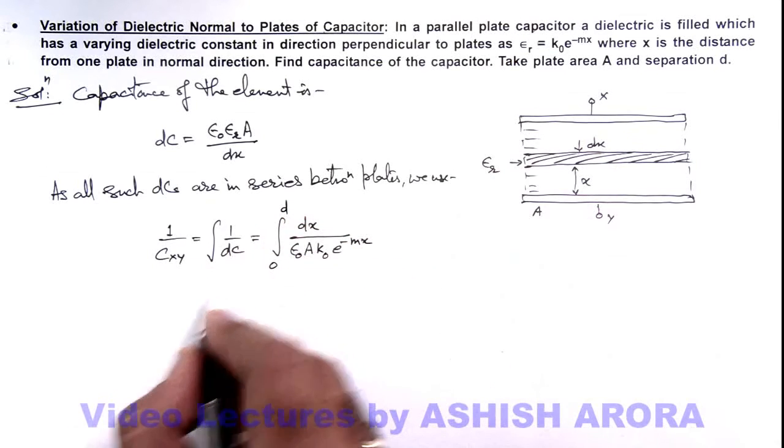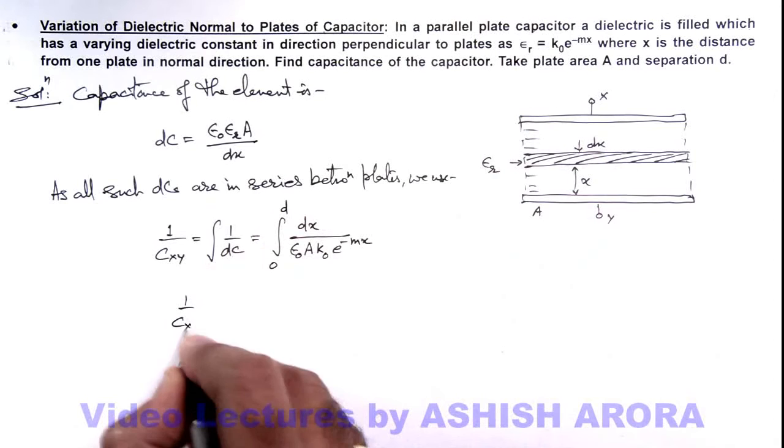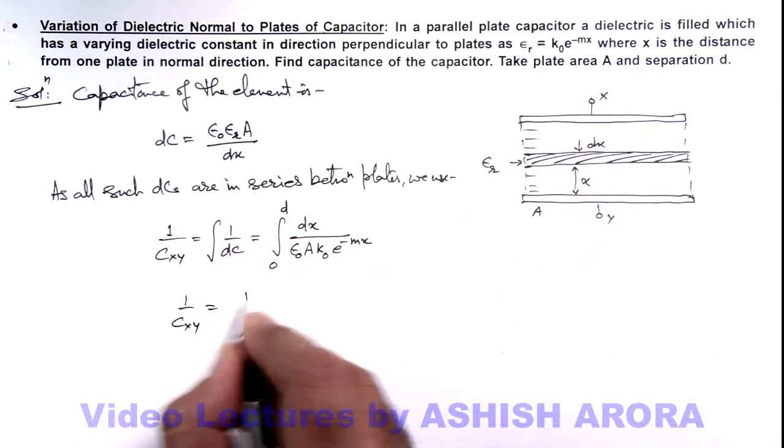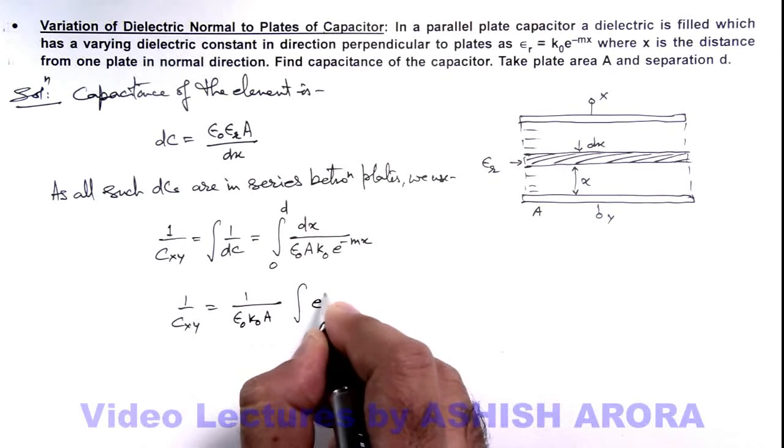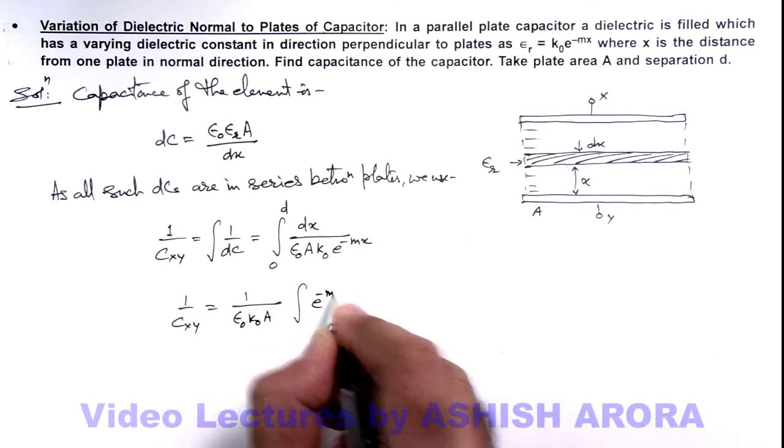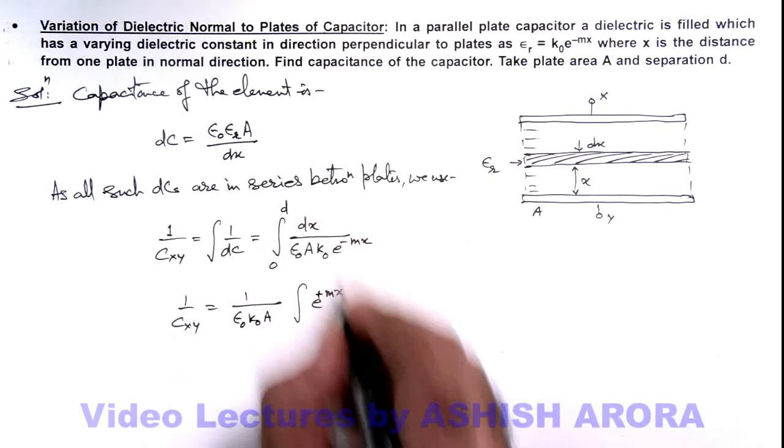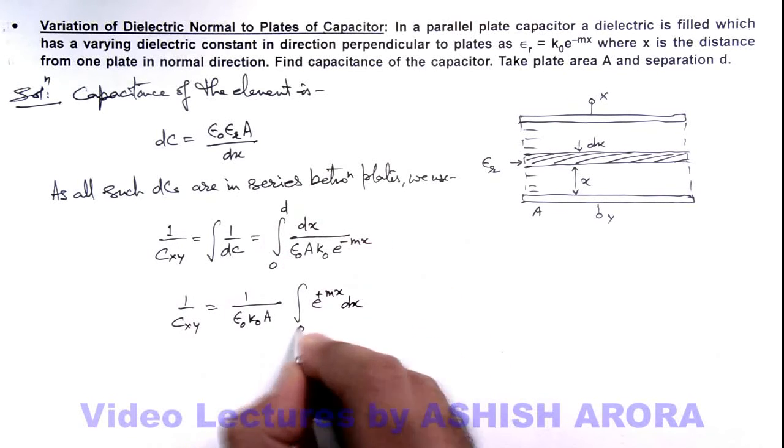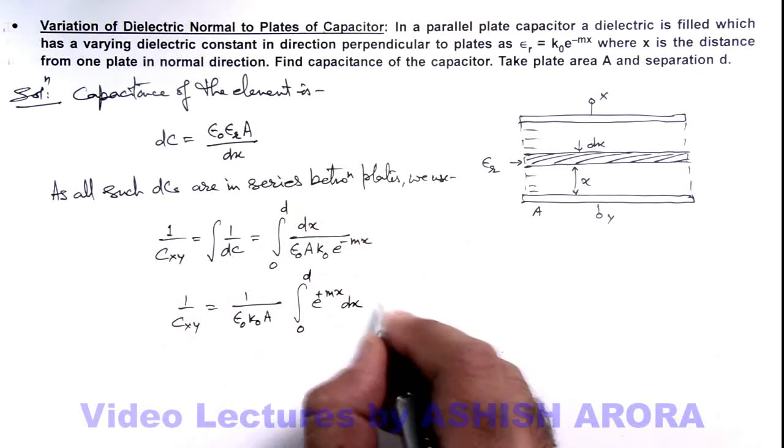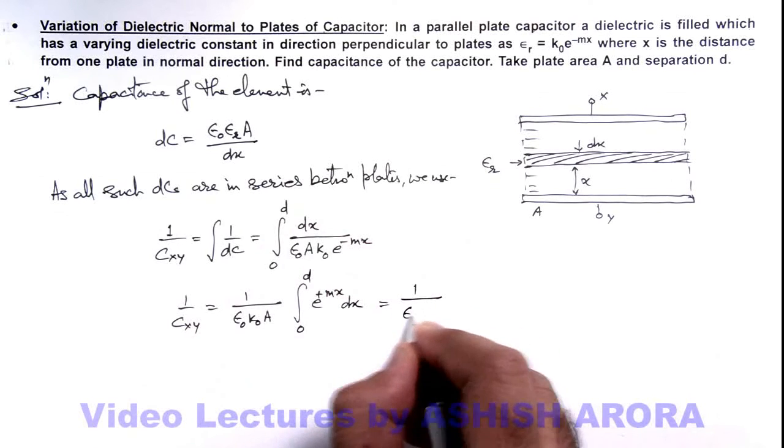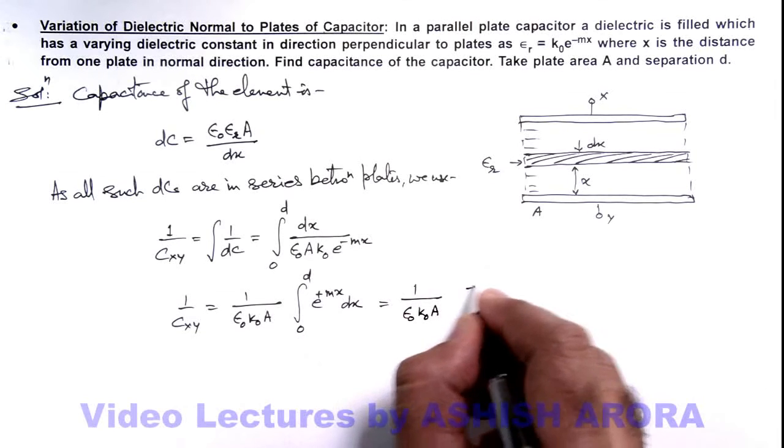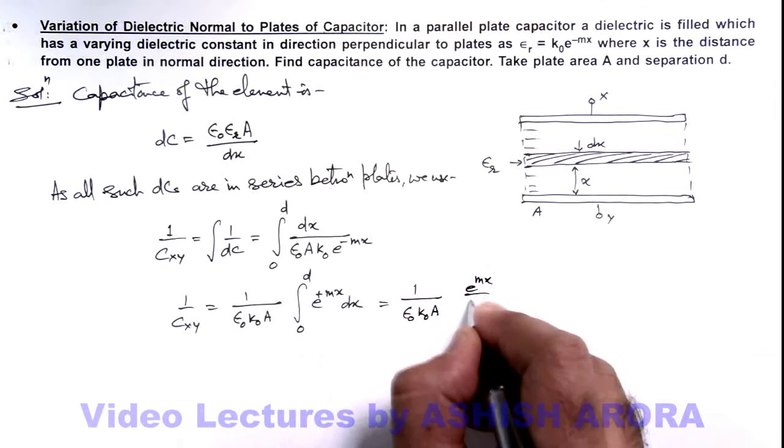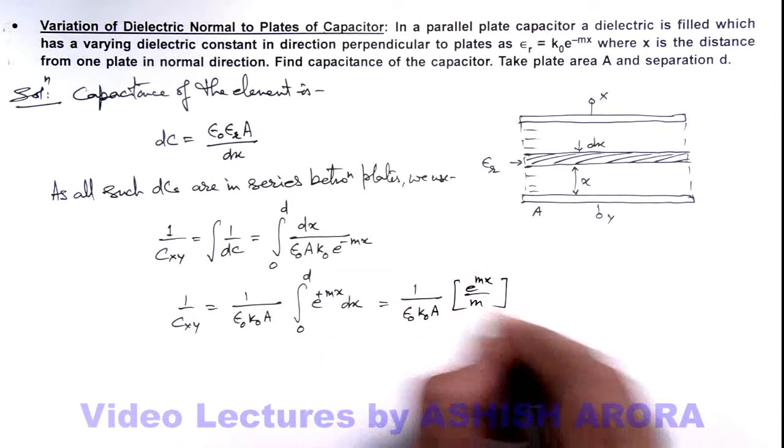So here we are getting this 1 by C_xy equals, we can take this 1 by epsilon_0 k_0 A as constants, this integration of e to power mx, this will become plus dx from zero to d. So this will be 1 by epsilon_0 k_0 A, and e to power mx integrating this will give us e to power mx by m, and we apply limits from zero to d.